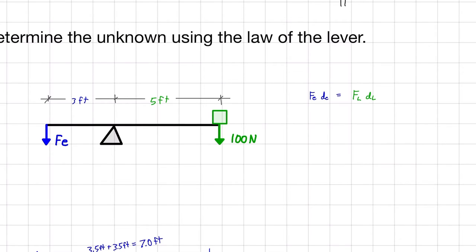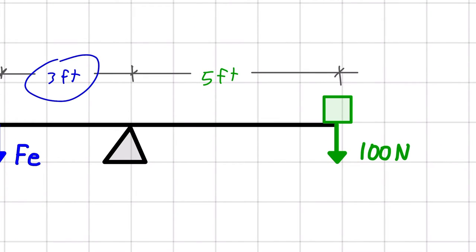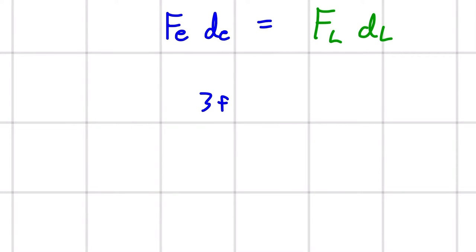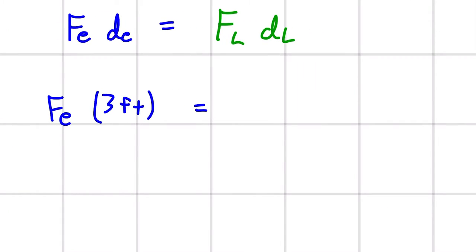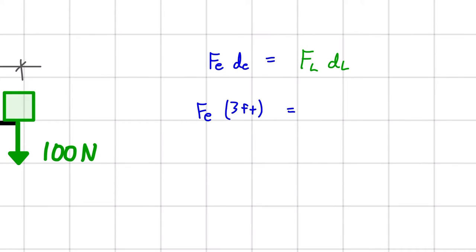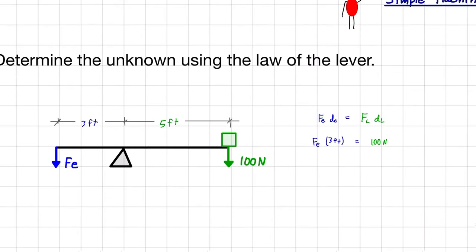And let's fill in the values that we know. So De is a value we know. De, we're going to write 3 feet. And Fe remember is our unknown, so I'm going to keep that as Fe. And that will be equal to FL times DL. So what's our FL? It's going to be 100 newtons. And then our DL is 5 feet.